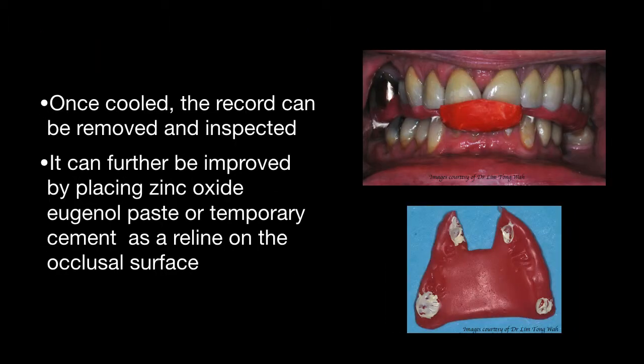Once cooled, the record can be removed and inspected. The record can also be further improved by placing zinc oxide eugenol paste or temporary cement as a relining material on the occlusal surface. These capture more details of the occlusal morphology.